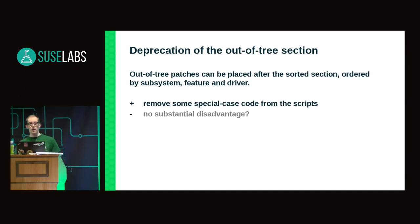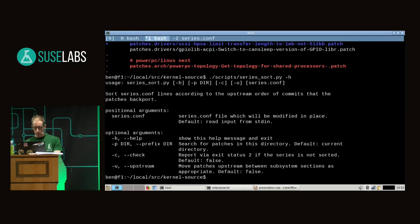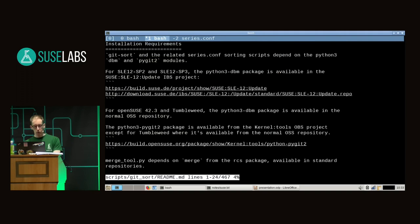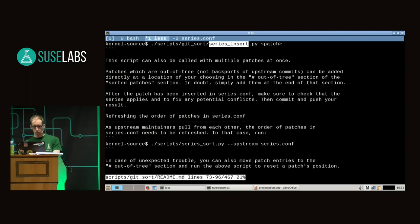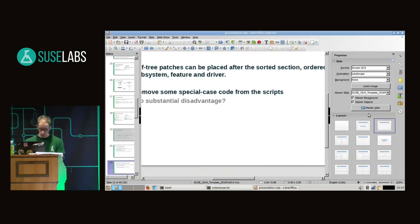An alternate workflow for adding patches without manually editing series.conf is to use the series-insert helper script. It doesn't require the existence of the out-of-tree section and will still insert new entries in series.conf. There is a readme file for all the scripts describing the main use cases, including series-insert, and I highly recommend having a look at it.